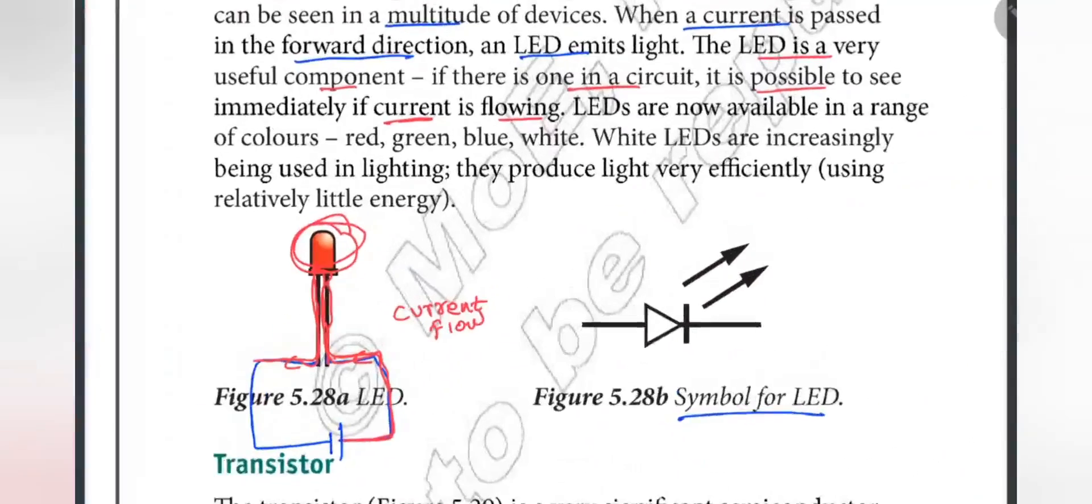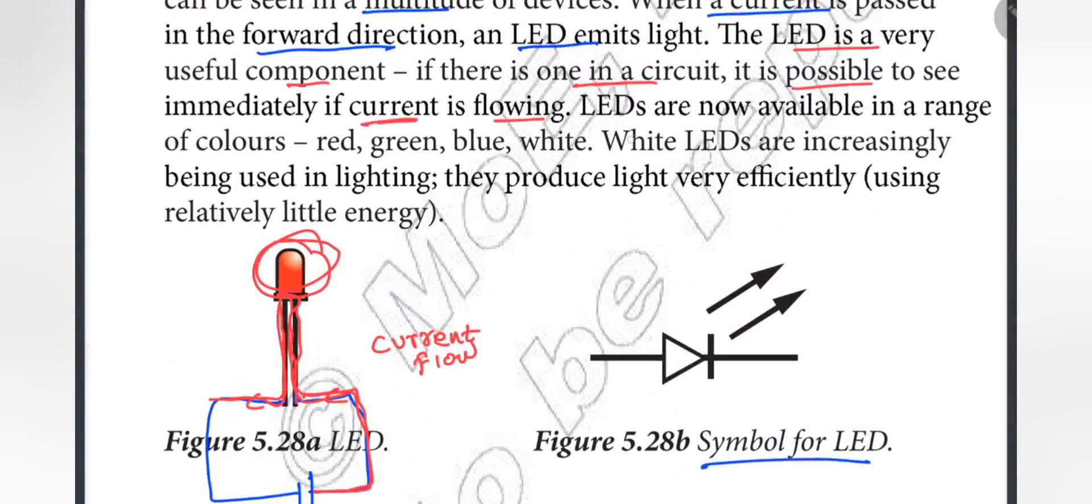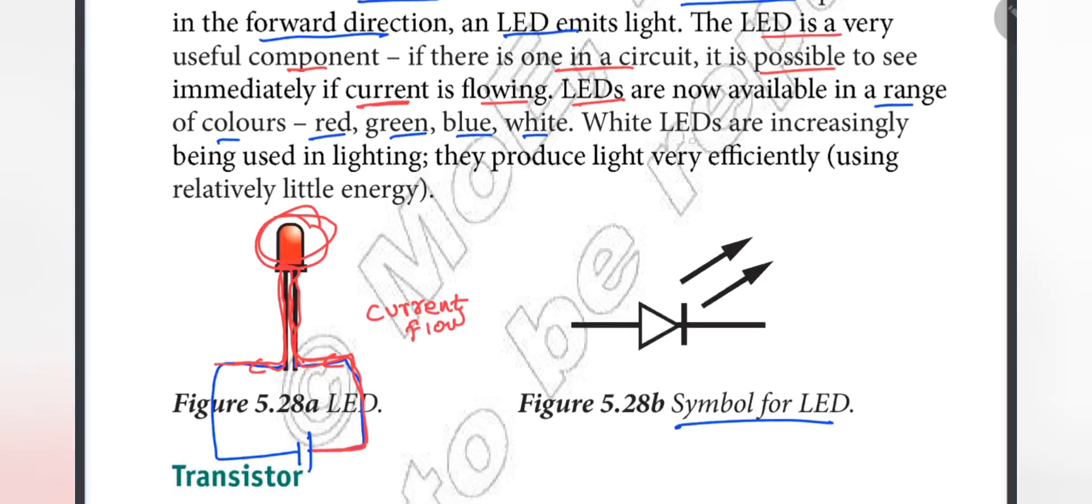The LED is now available in a range of colors: red, green, blue, white. White LEDs are increasingly being used in lighting. They produce light very efficiently.